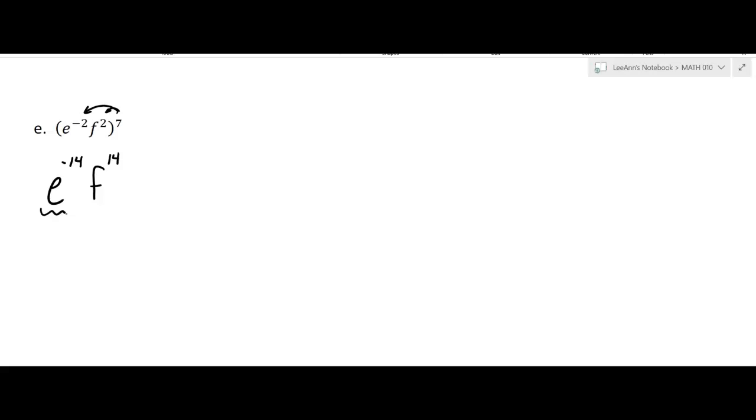So if you're a positive exponent, stay put, but if you're a negative exponent, in this case it's going to go to the denominator. So it's going to look like this, f to the 14 over e to the 14. Okay, so you play around with them. It takes a while to get used to these things and the rules and using them and stuff, but it'll be fun. You just got to practice a little bit.